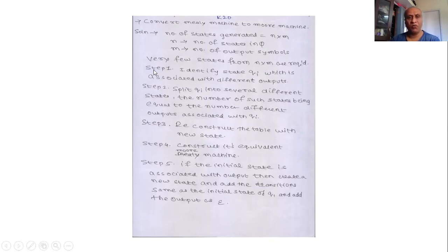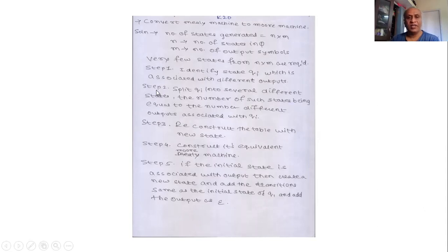Step number one: identify a state, let us call it QI, which is associated with different outputs. We have to check a state and that state should generate a different output. In step two, the state which we had identified, we have to split it into multiple states, with a mapping between the states and the outputs — as many outputs, as many states.